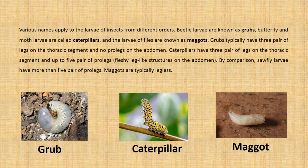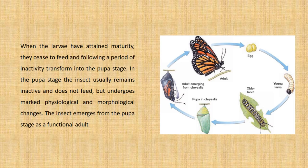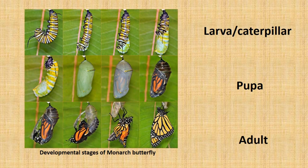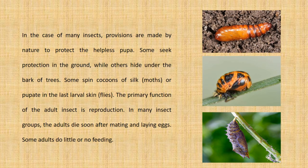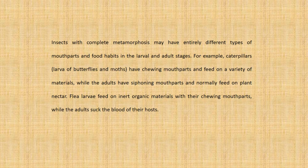When the larvae have attained maturity, they cease to feed and, following a period of inactivity, transform into the pupa stage. In the pupa stage, the insect usually remains inactive and does not feed, but undergoes marked physiological and morphological changes. The insect emerges from the pupa stage as a functional adult. In the case of many insects, provisions are made by nature to protect the helpless pupa — some seek protection in the ground, others hide under the bark of trees, some spin cocoons of silk (moths), or pupate in the last larval skin (flies). The primary function of the adult insect is reproduction, and in many insect groups the adults die soon after mating and laying eggs. Some adults do little or no feeding. Insects with complete metamorphosis may have entirely different types of mouthparts and food habits in the larval and adult stages.